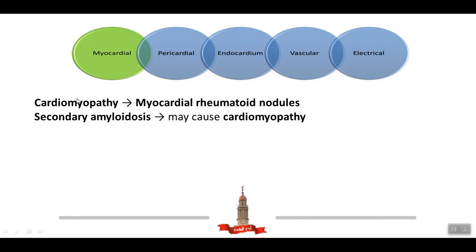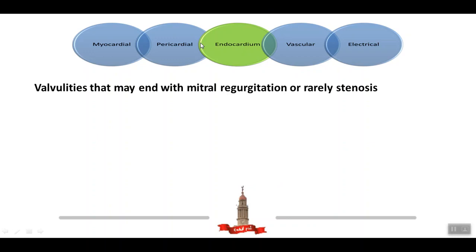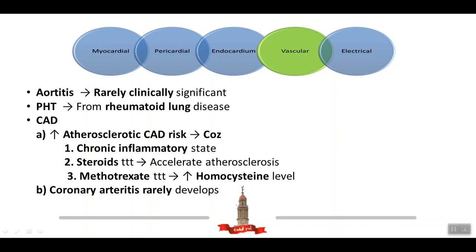Myocardial affection of rheumatoid arthritis includes myocardial rheumatoid nodules causing cardiomyopathy and secondary amyloidosis causing cardiomyopathy. Pericardial affection can affect up to 50% of patients, with presentations including acute pericarditis, constrictive pericarditis, or chronic asymptomatic effusion. The pericardial fluid is usually bloody with high leukocyte count and low glucose level. Endocardial affection includes valvulitis that may result in mitral regurgitation or rarely stenosis. Vascular affection includes arteritis and pulmonary hypertension from rheumatoid lung disease and interstitial lung disease.